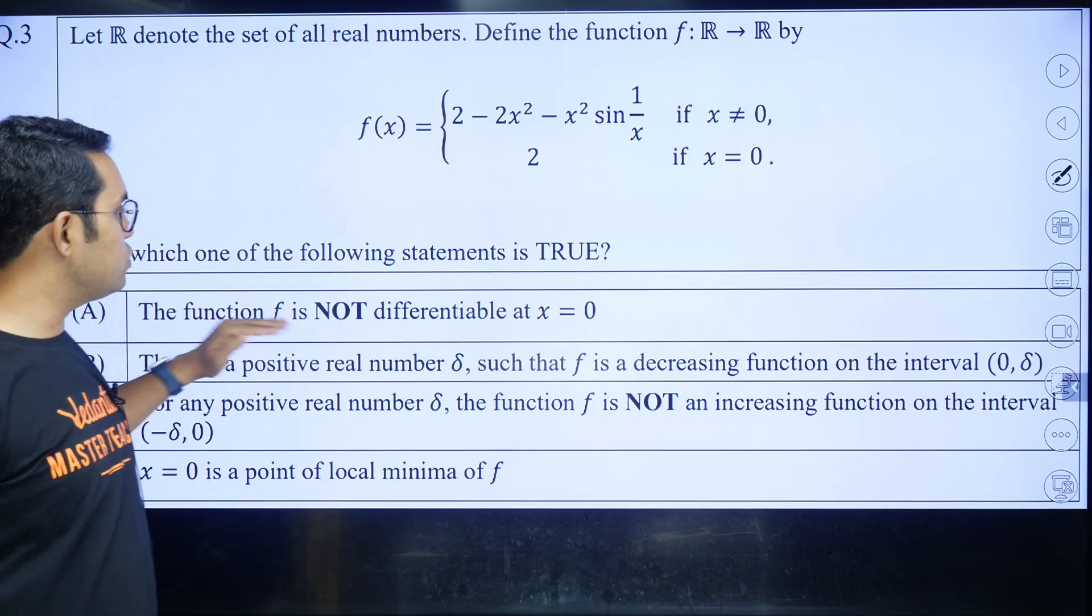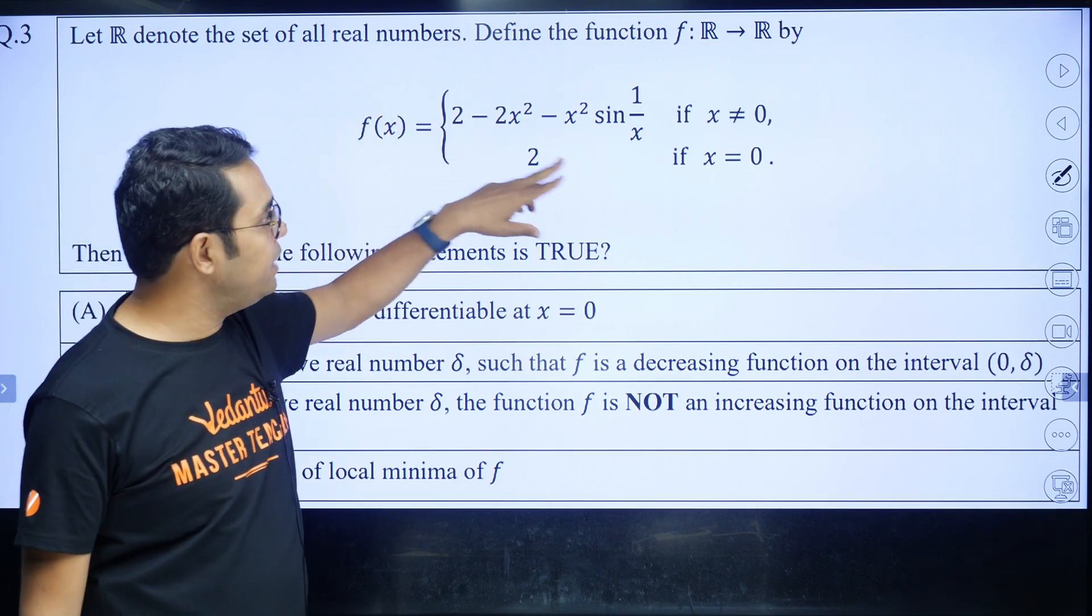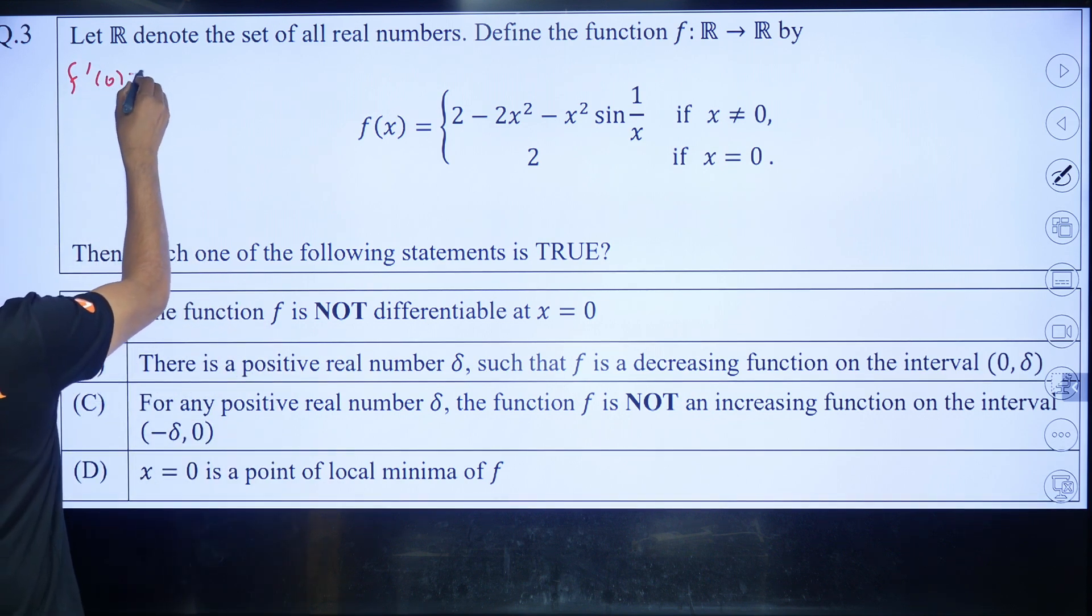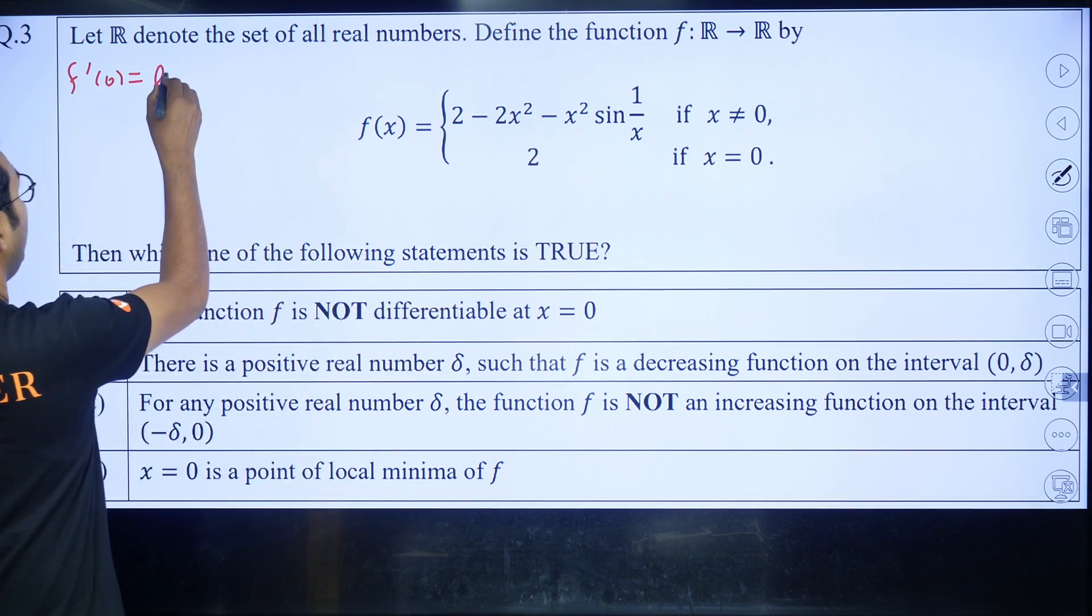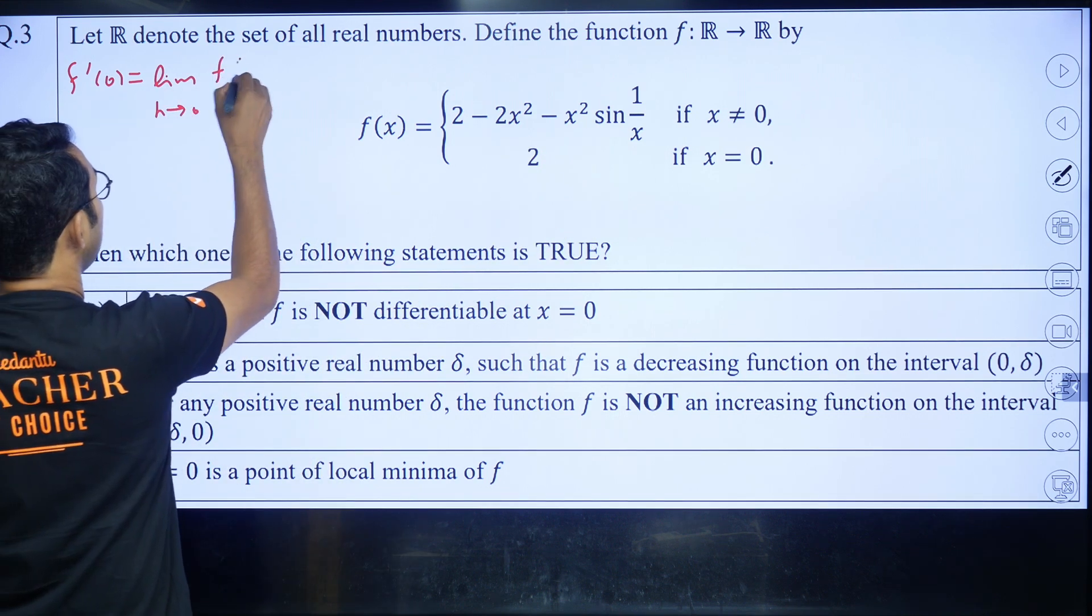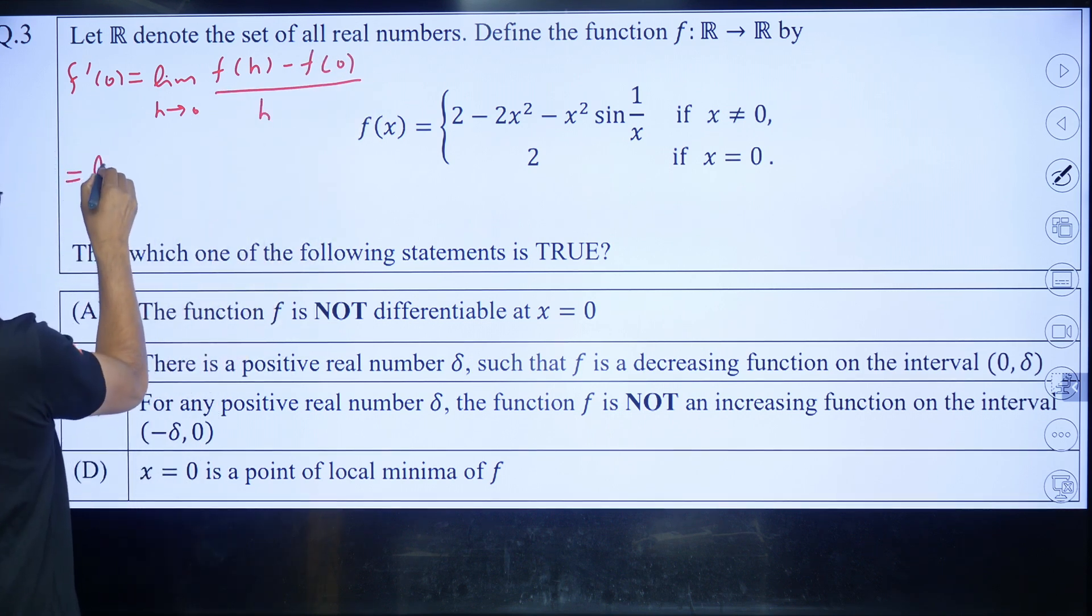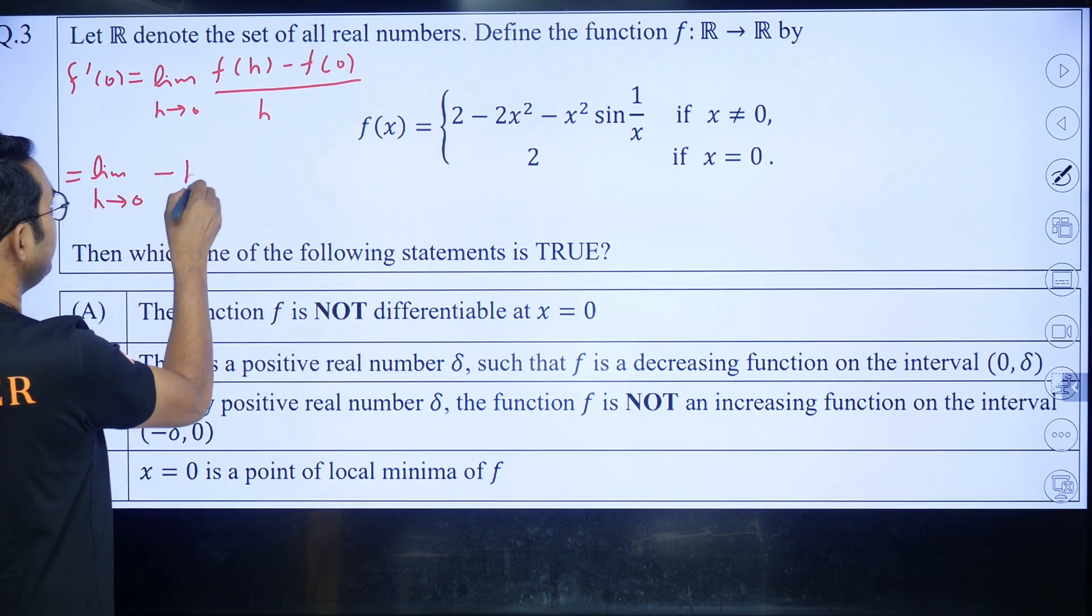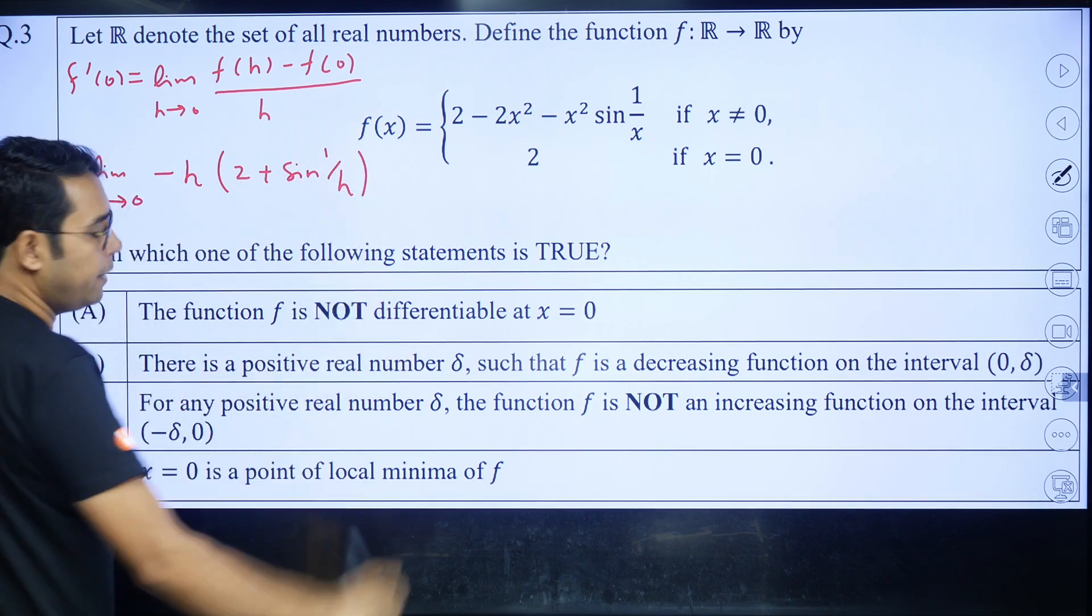Here, my first option is that function is not differentiable at x is equal to zero. Because function is continuous at zero, you can check. And you can very easily see when f dash zero by first principle. Because in such function, we have to do it by first principle only. So it will be limit h approaches to zero, f of zero plus h minus f of zero by h. So this becomes limit h approaches to zero. This two will get cancelled. One h will also cancel that h.